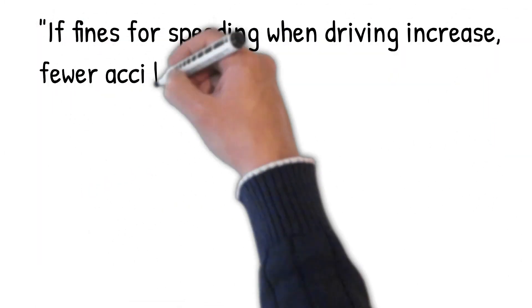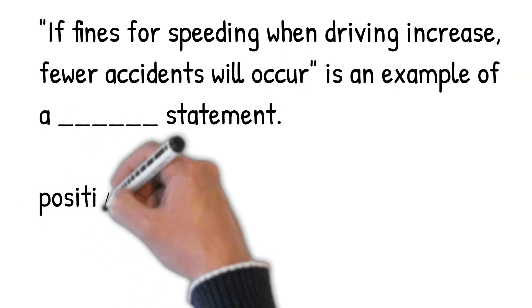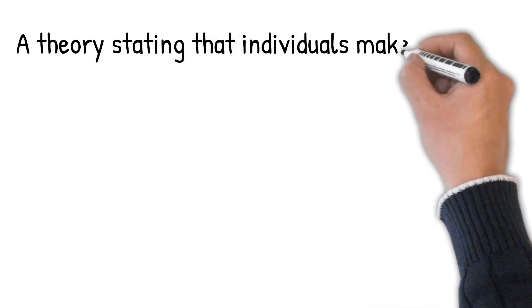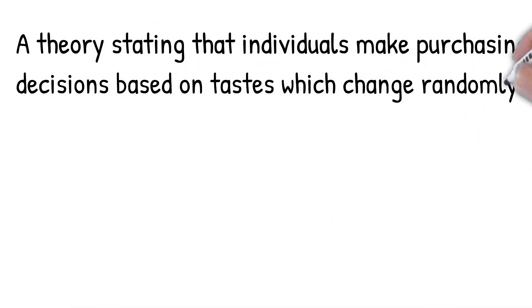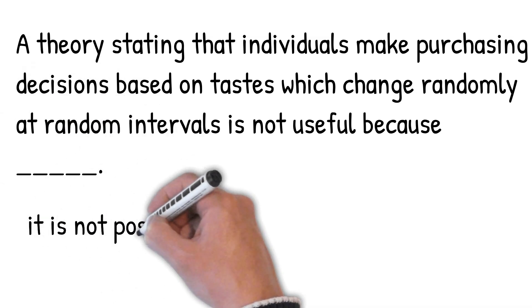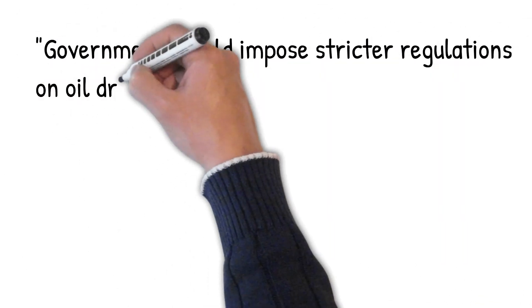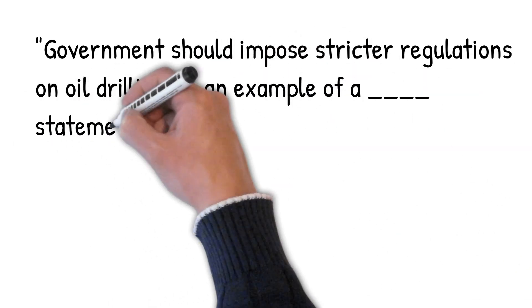If the fine for speeding when driving increases, fewer accidents will occur — this is an example of a positive statement because it can be tested. A theory stating that individuals make purchasing decisions based on tastes that change randomly is not useful because its predictions cannot be tested. 'Government should impose stricter regulations on oil drilling' is an example of a normative statement — it is a value judgment.